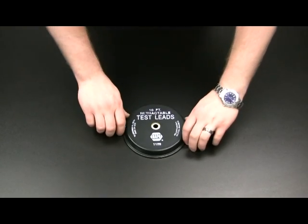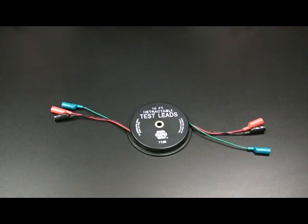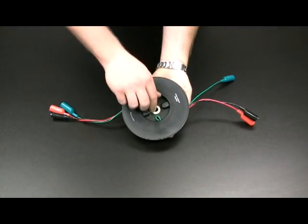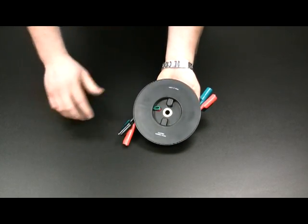The retractable test leads pull out and stay at desired length and rewind when not in use. Each unit is rated at a maximum of 10 amps when the leads are fully unwound and a maximum of 6 amps when the leads are wound.